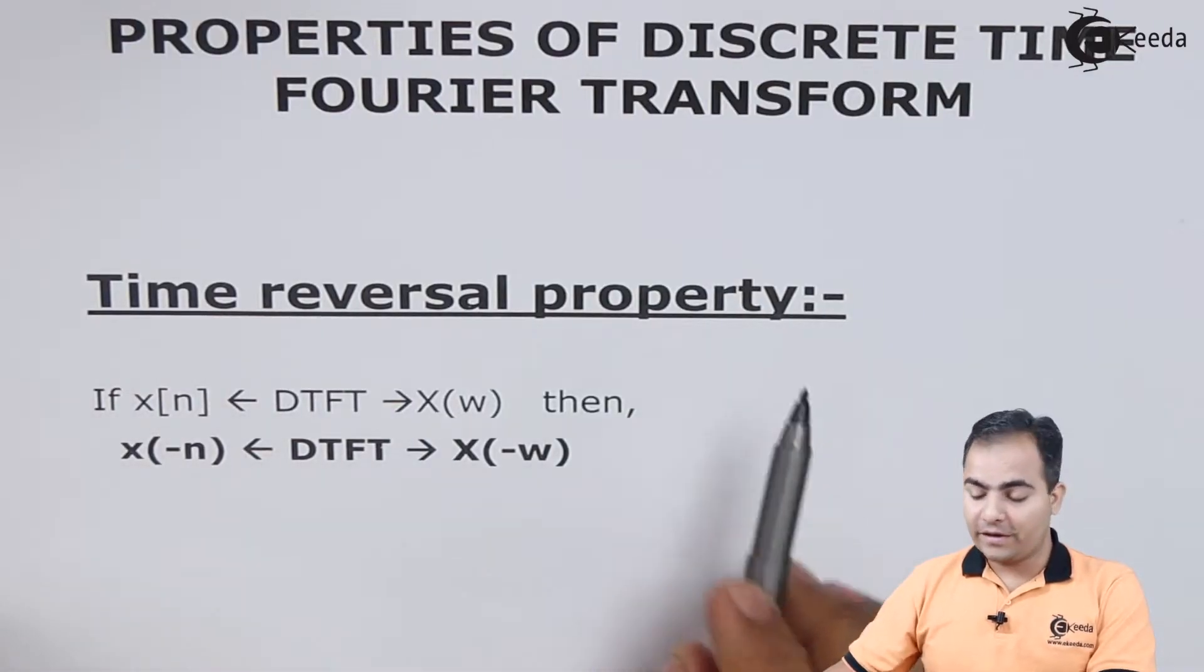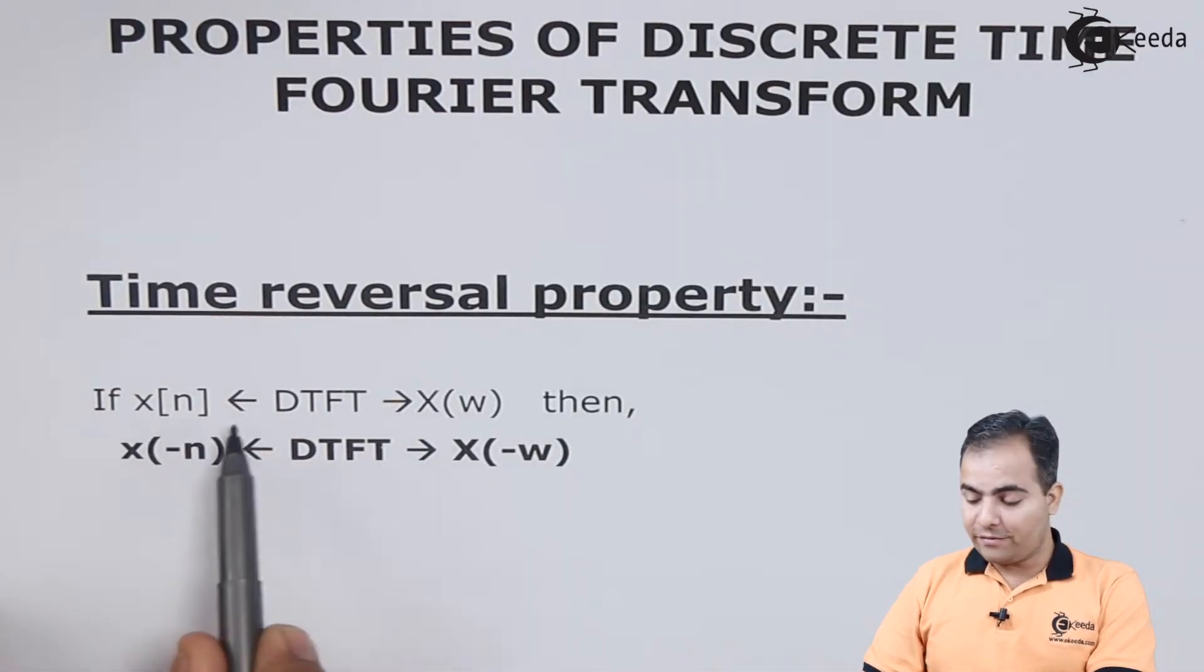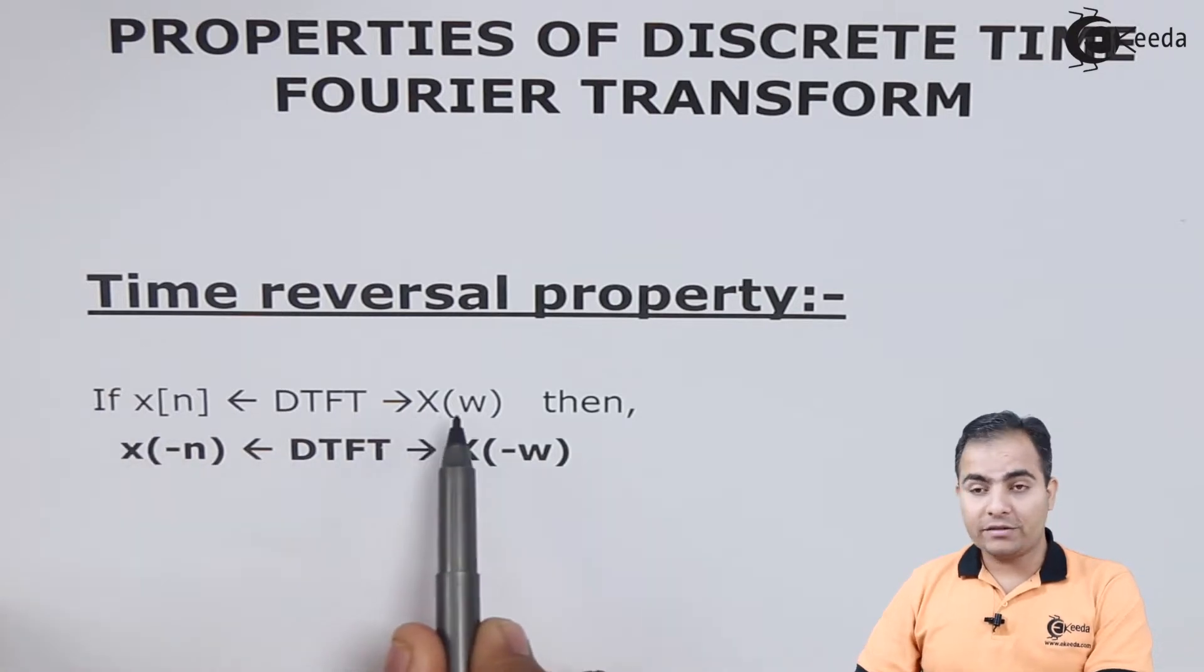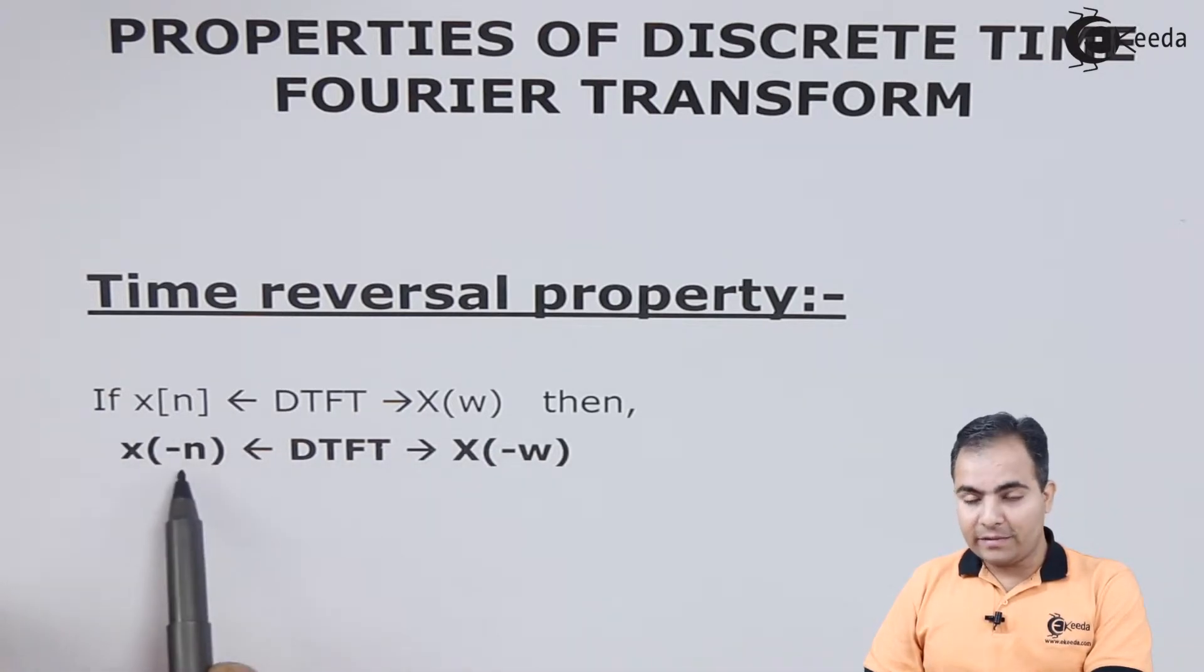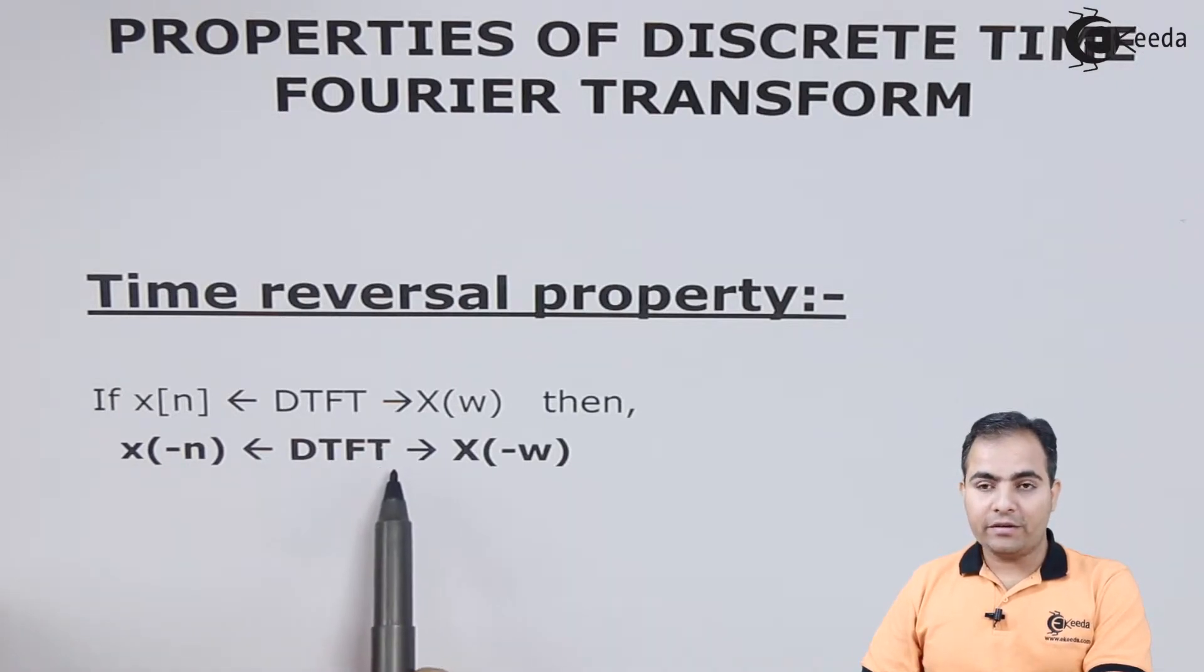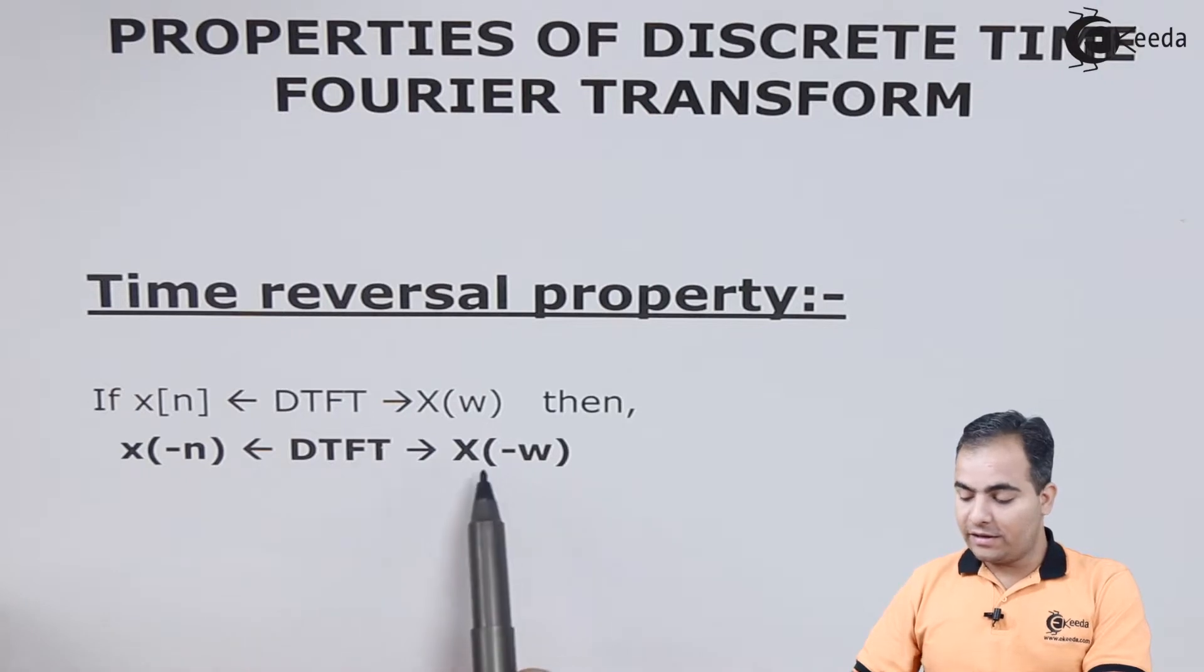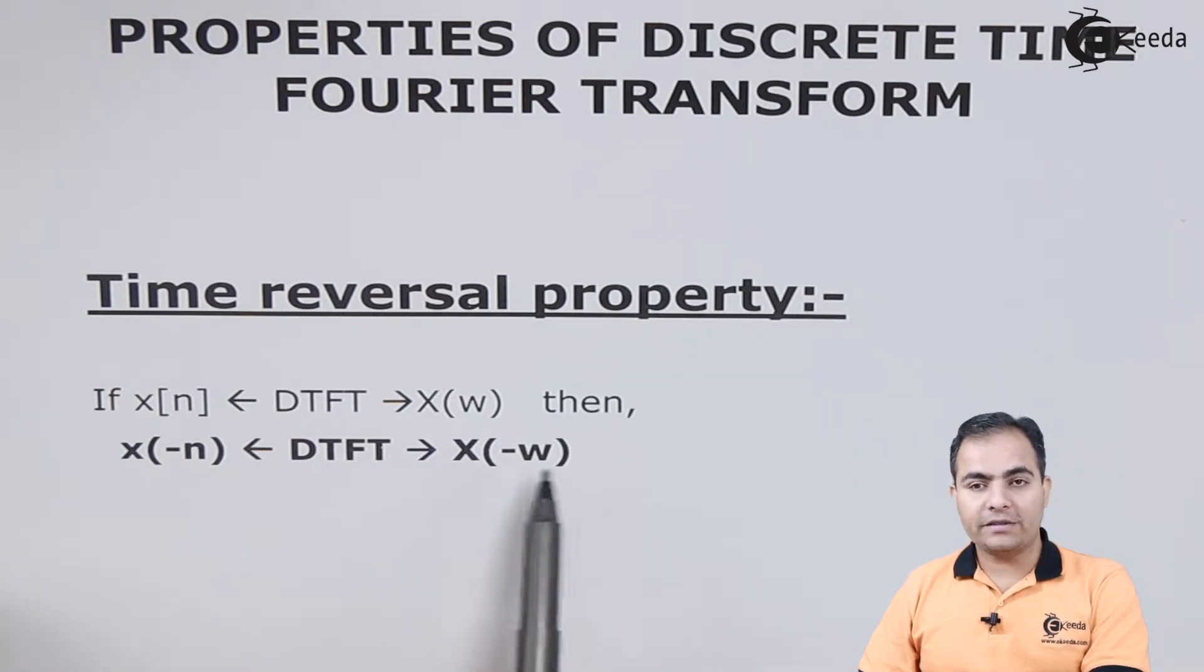So the time reversal property: if the discrete time Fourier transform of x of n is represented by X of omega, then x of minus n, that is the mirror image of x of n sequence, in DTFT or after calculating DTFT, the result is represented by X of minus omega. So this statement we are going to prove.